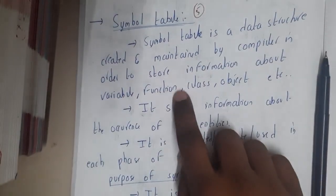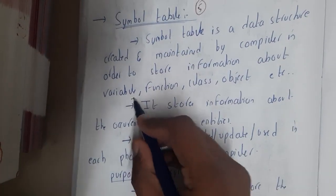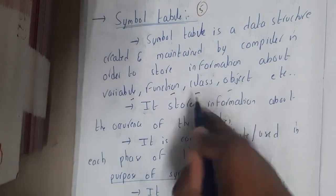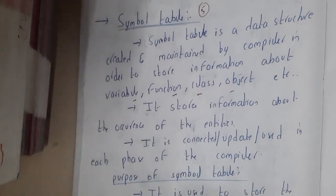Symbol table is a data structure created and maintained by the compiler in order to store information about variables, functions, class, object, etc. Whenever you hear the word symbol table, you might think that only variables will be stored there, but that's not the truth.